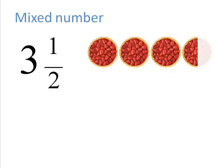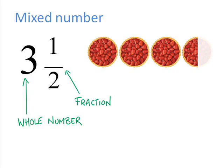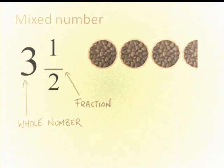A mixed number is a number that contains both a whole number and a fraction. So here the example of a mixed number is 3 and 1/2, 3 being the whole number, the fraction being a half.